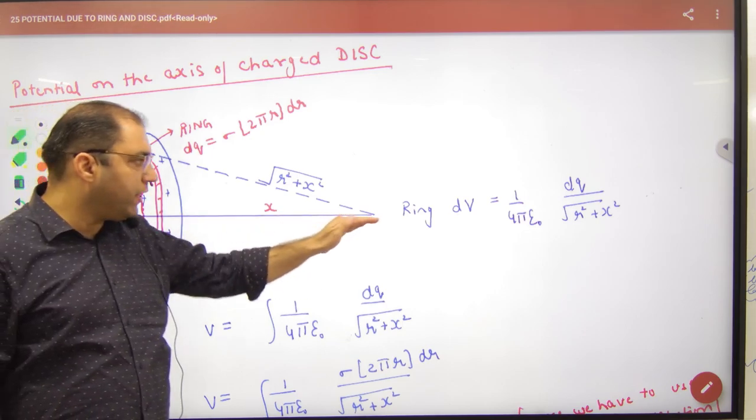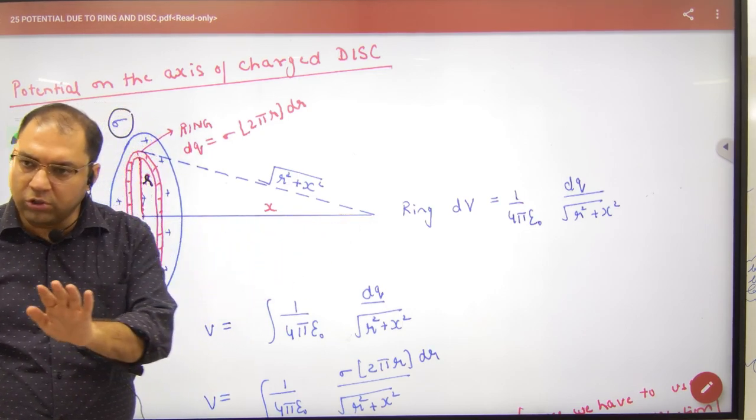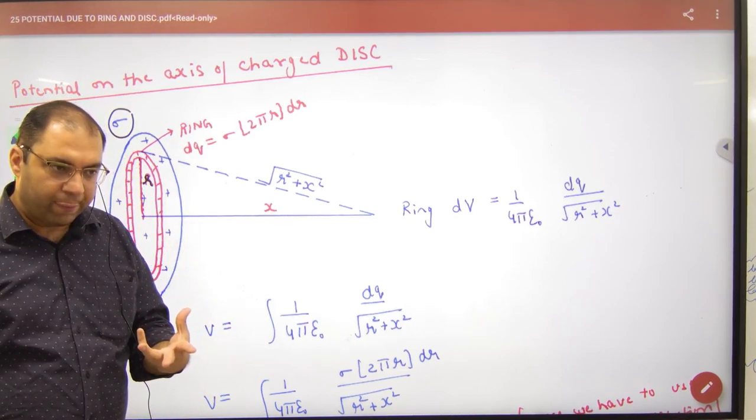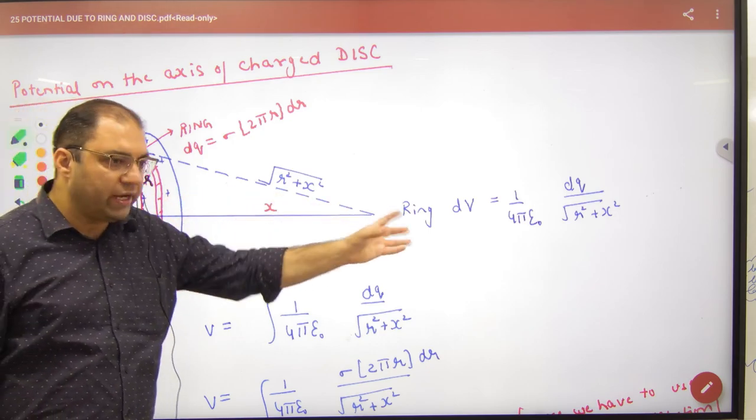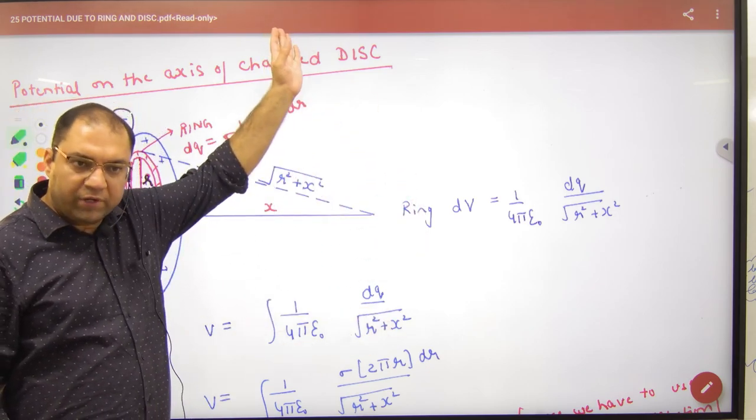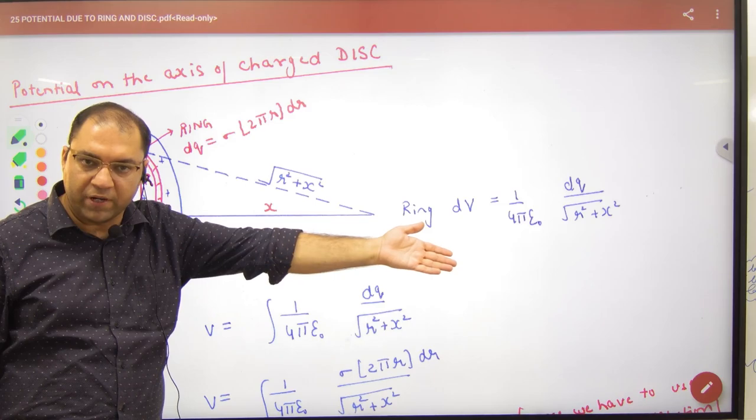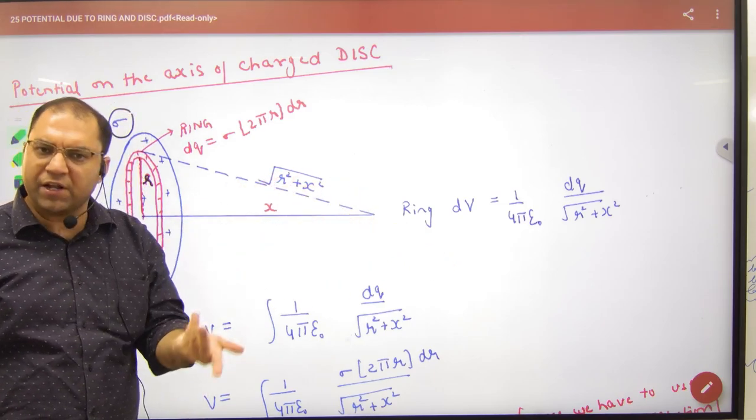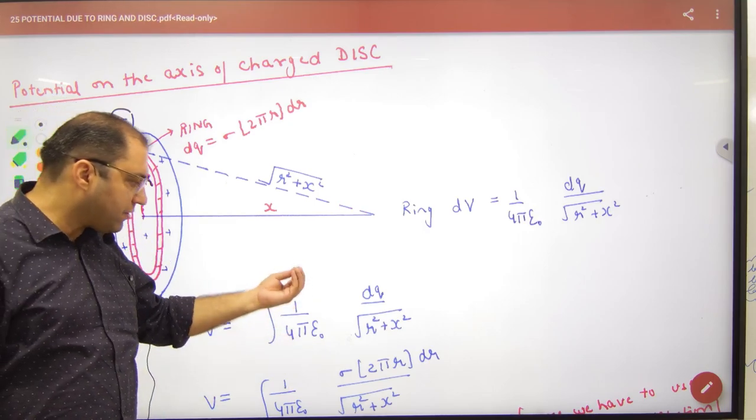On the axis, you take an arbitrary ring element. Find the small potential contribution from that ring, then integrate to get the total potential.